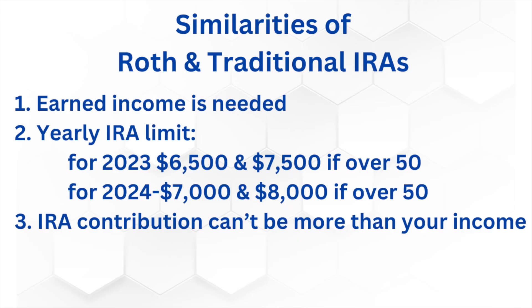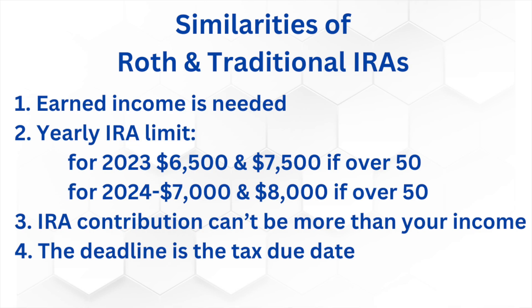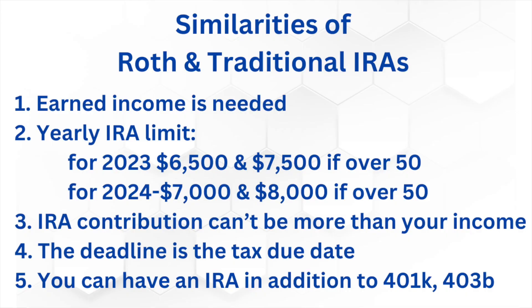The third similarity is that you cannot contribute more than what you earn — if your yearly income is $3,000, your IRA contribution limit is also $3,000. The fourth similarity is that you can contribute to both types of IRAs from the start of the tax year on January 1st until the tax due date, usually around mid-April of the following year. The fifth similarity is that you can have an IRA in addition to your employer-sponsored retirement plans. You can have a 401k or 403b and an IRA at the same time, contributing up to the annual limit to each account. With an IRA you also gain access to a broad range of investment options.